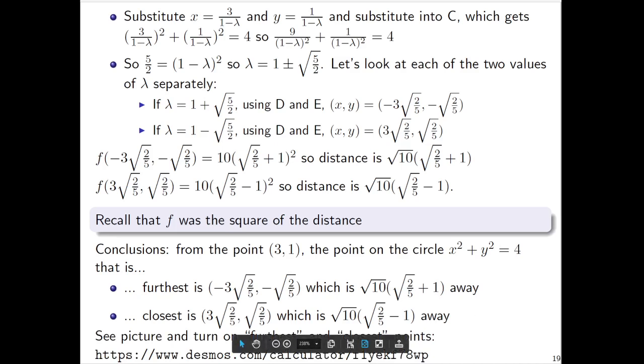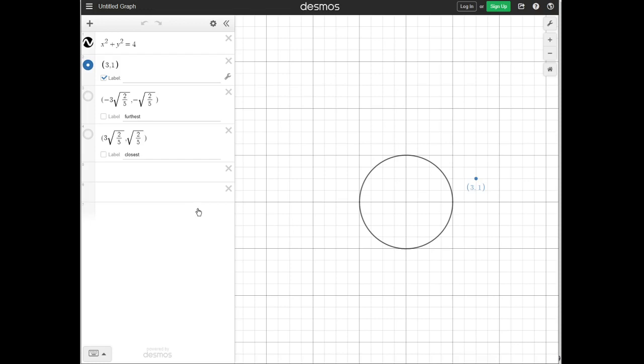Let's take a look at a picture of this. We only want to consider points that are on the circle. Here's the point (3,1), which is not on the circle. Which point is furthest and which is closest? The closest is this point, and the furthest we had computed was that point.